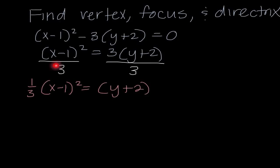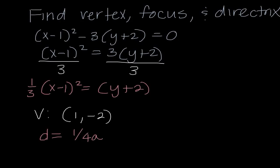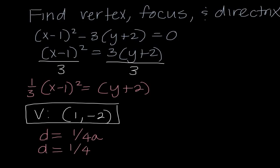That one-third came because it's 1 divided by 3. The first thing I'll find is the vertex, which is (1, negative 2) — taking the opposite of what's inside the parentheses. To find the focus and directrix, I use d equals 1 over 4a. Here, a equals one-third, so I have 1 over (4 times one-third), which is 1 over four-thirds, which equals 3 fourths. So the distance from the vertex is three-fourths.